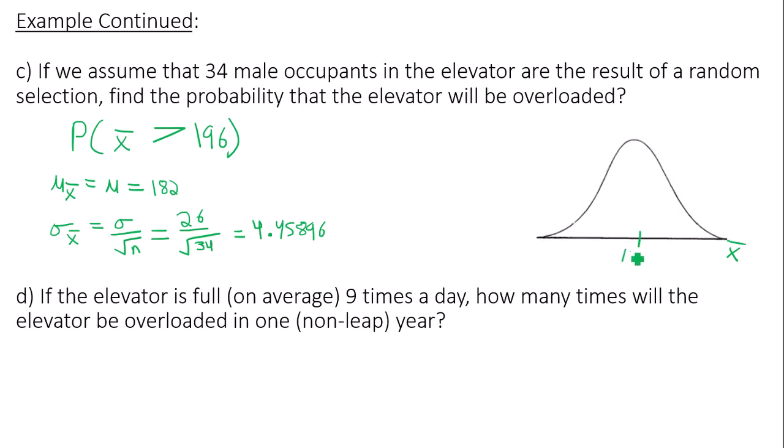So in my sampling distribution, I have a mean of 182. And I want to know the probability that the means, the mean of the sample means, will be more than 196. So, area to the right of 196.